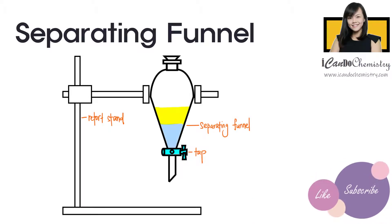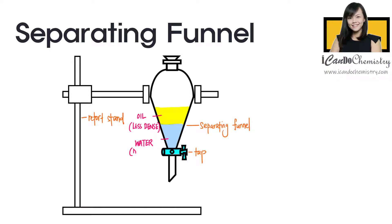When we allow the mixture to rest, we will see two distinct layers of liquid. The yellow liquid is oil while the blue liquid is water. Oil floats on water because it has lower density than water.